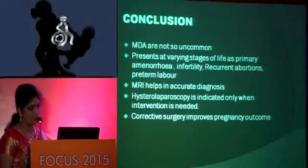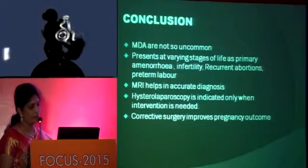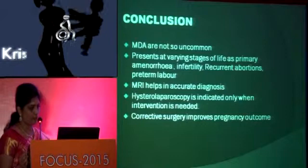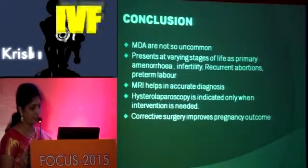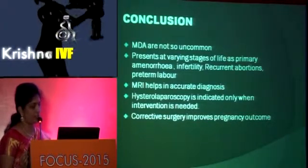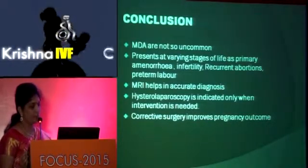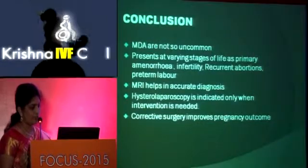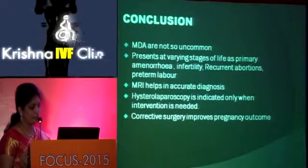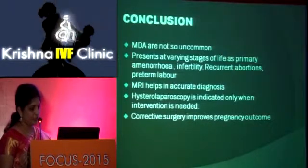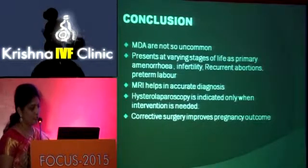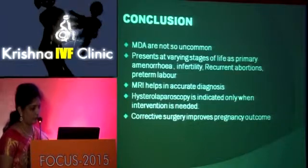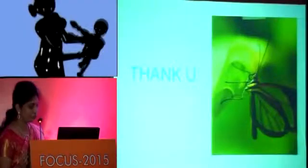Mullerian duct anomalies are not uncommon. They may present at varying stages of life as primary amenorrhea, infertility, recurrent abortions, and preterm labor. MRI helps in accurate diagnosis. Hystero-laparoscopy is indicated only when intervention is needed. Corrective surgery in indicated cases improves pregnancy outcome. Thank you.